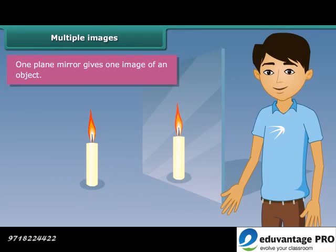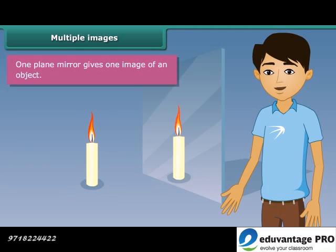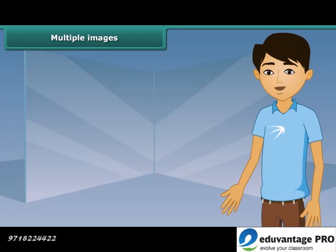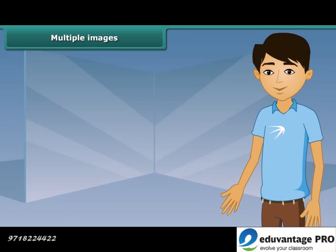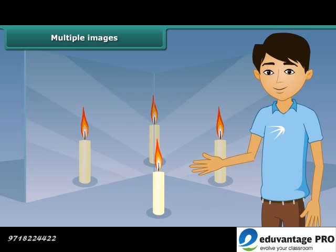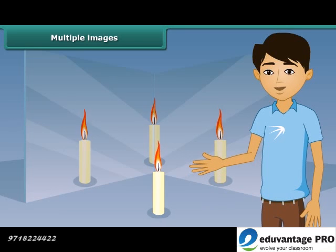One plane mirror gives one image of an object. Can you tell how many images we would obtain with two plane mirrors? Let us perform an activity: take two plane mirrors and set them at right angles to each other with their edges touching. Place a lighted candle in between the mirrors. Strangely, we can see three images of the candle in the two mirrors. This is how multiple images are formed in a mirror maze.